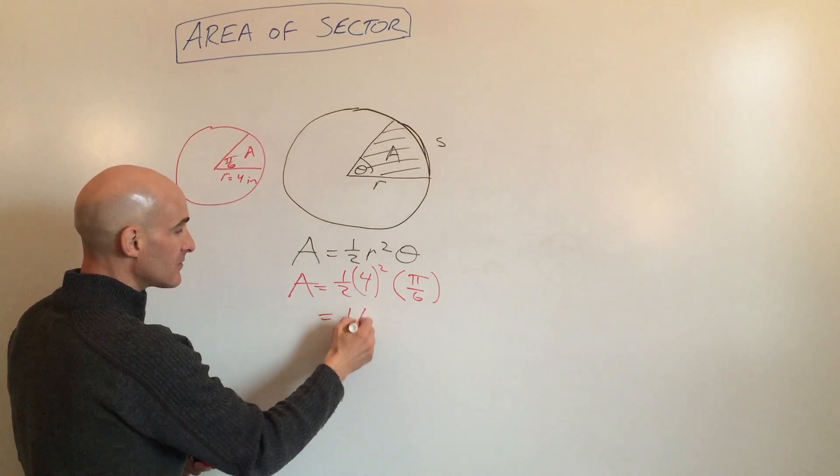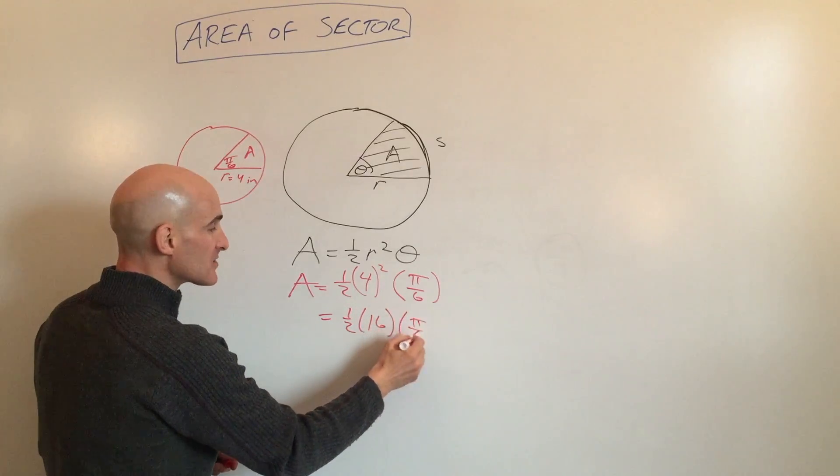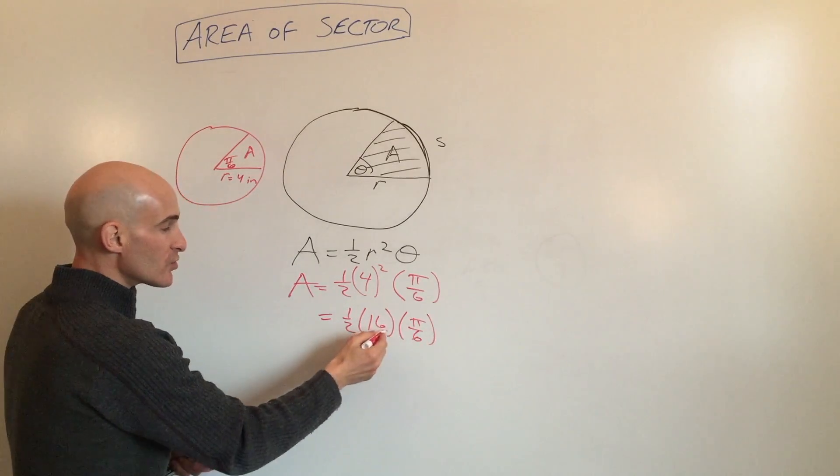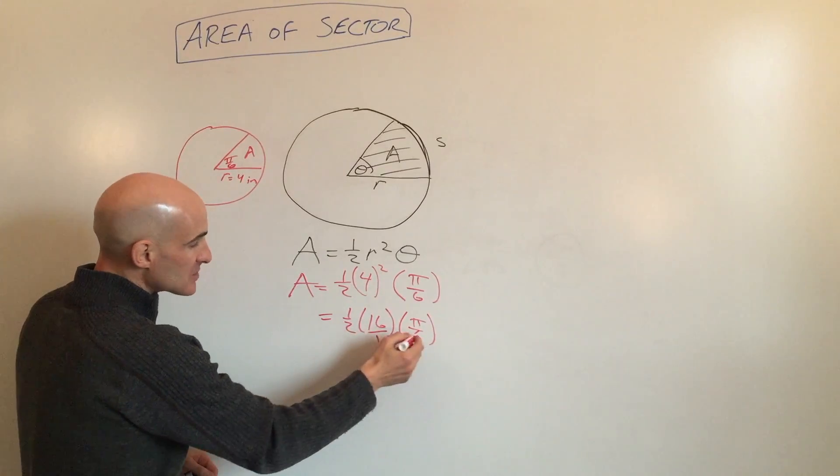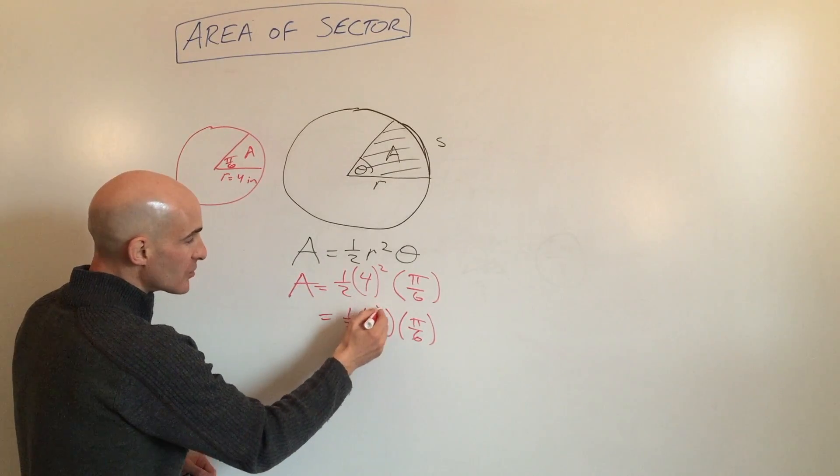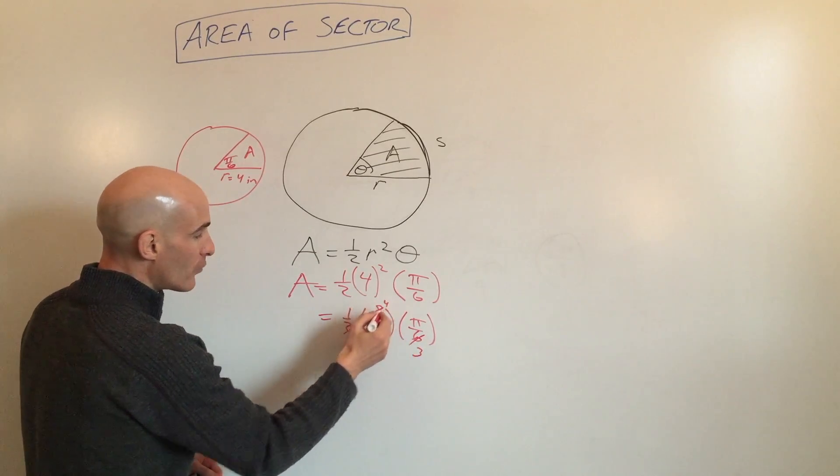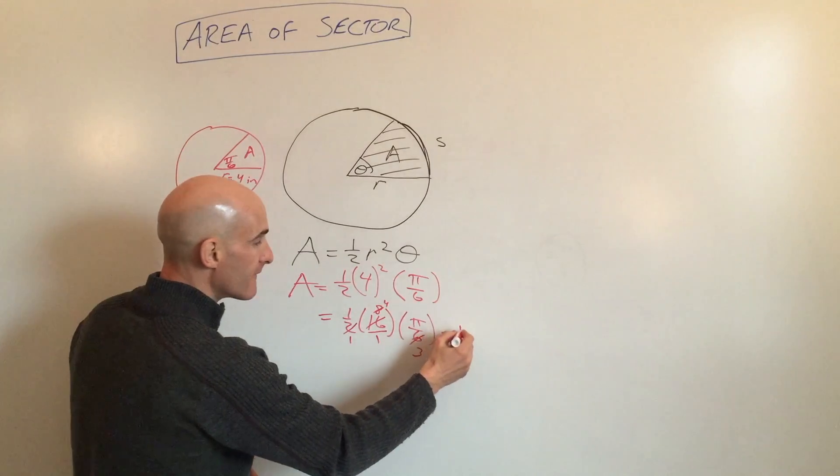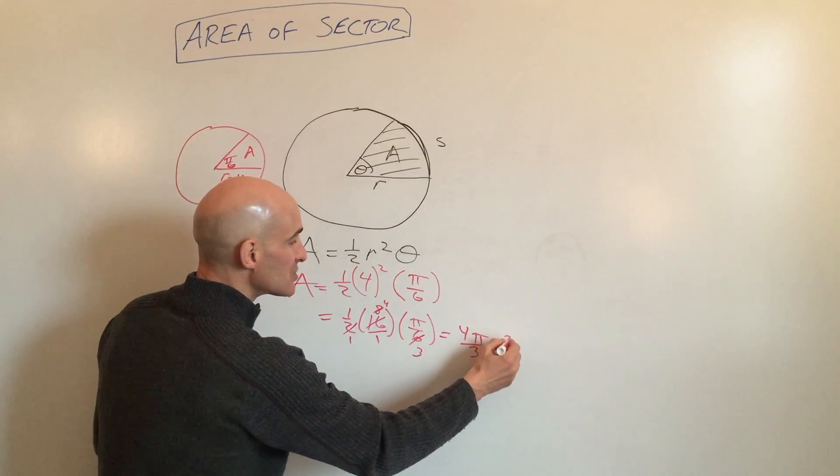So one-half times 16 times pi over six. You can do some reducing. Numerator and denominator. Let's do that. So two goes in here once. Two goes in here eight. Two goes into both of these. Three and four. So if you multiply across, you get four pi over three inches squared.